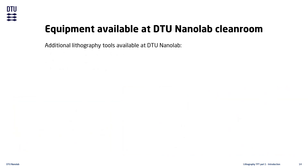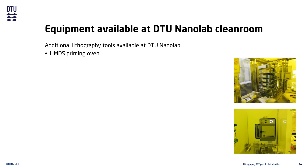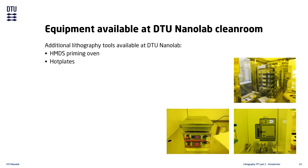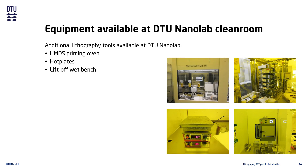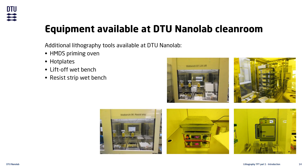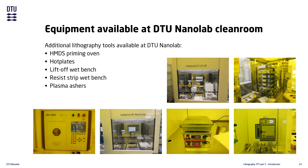Additionally, we have several auxiliary tools which are used by most processors: an HMDS priming oven for pre-treatment of chips or batches of wafers; tabletop hotplates for baking after manual spin coating or for applying crystal bond; a lift-off wet bench for metal deposition processes; a resist strip wet bench for removing leftover resist or cleaning substrates of old resist; and plasma ashers for both resist stripping and de-scumming.